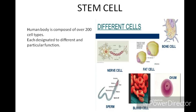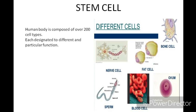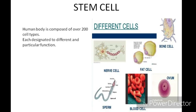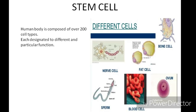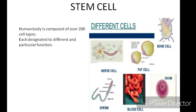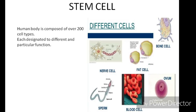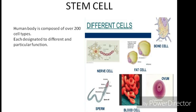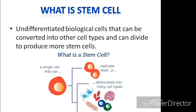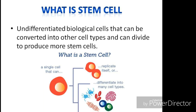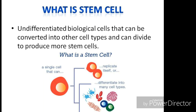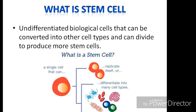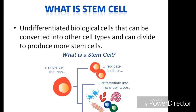The human body is composed of over 200 cell types, and each and every cell has its own function. Nerve cells transmit signals, sperm cells and ovum contribute to the zygote, and fat cells store fat. But stem cells do not have a specific function assigned to them. Stem cells are undifferentiated biological cells that can be converted into other cell types and can divide to produce more stem cells.